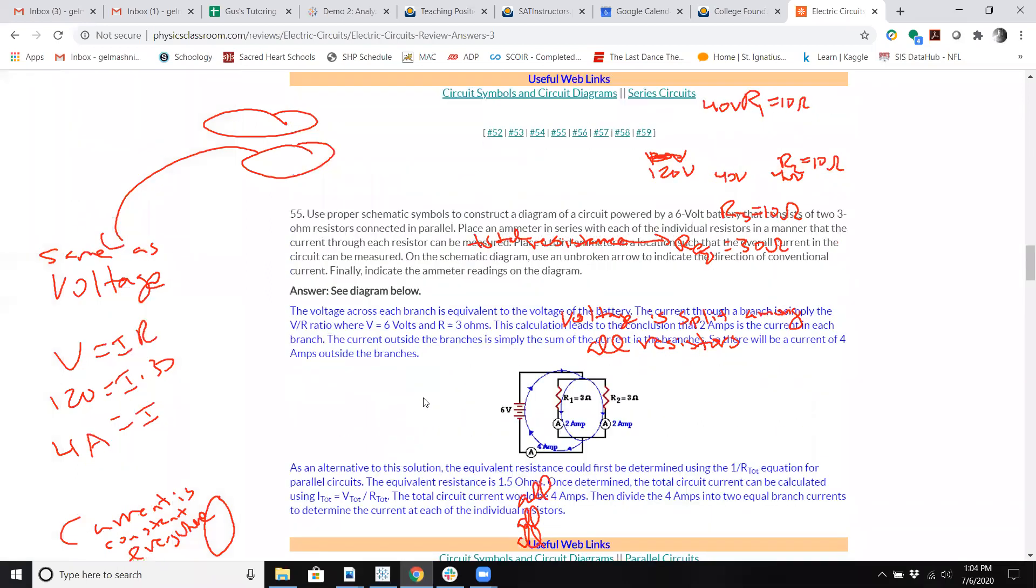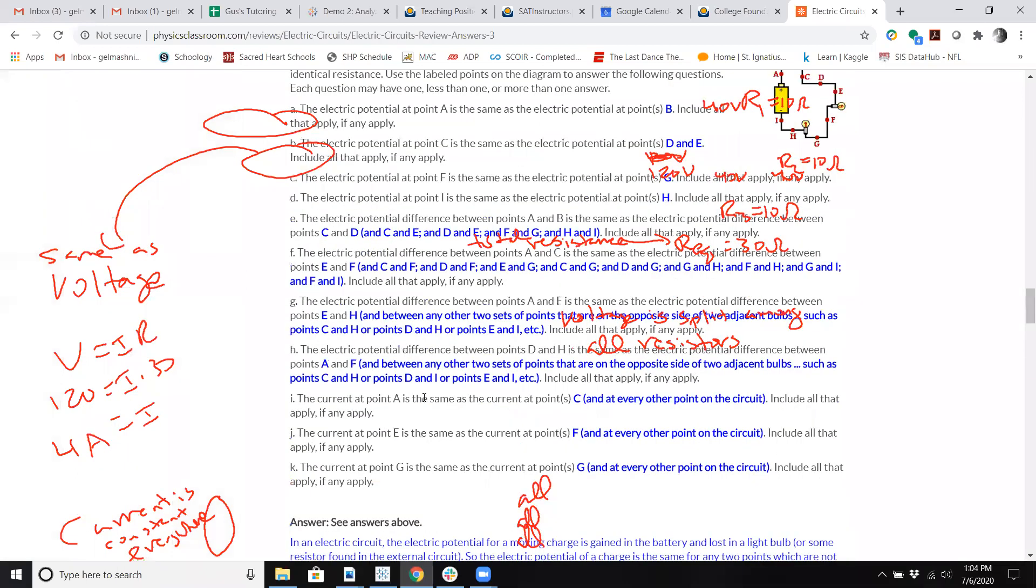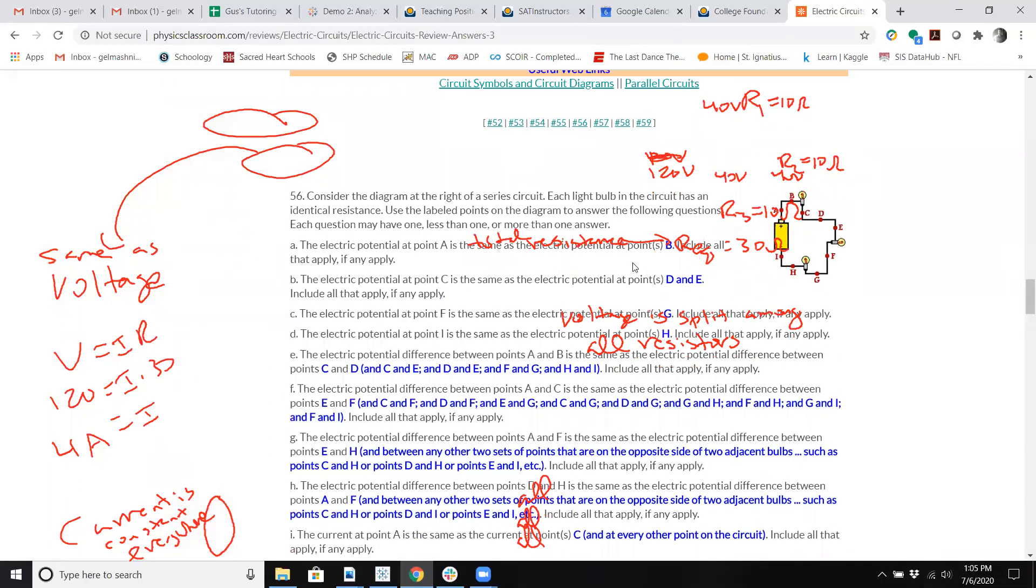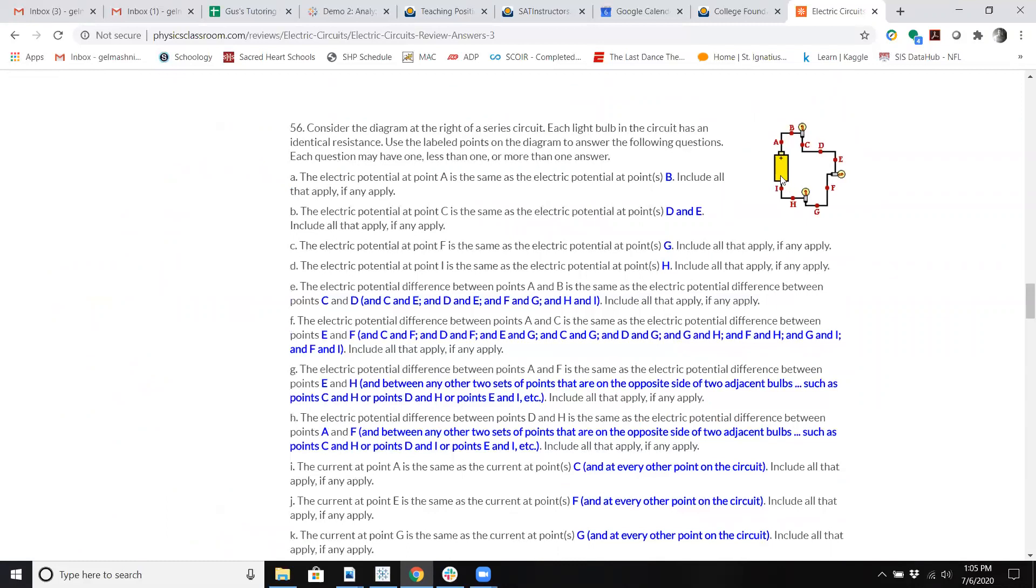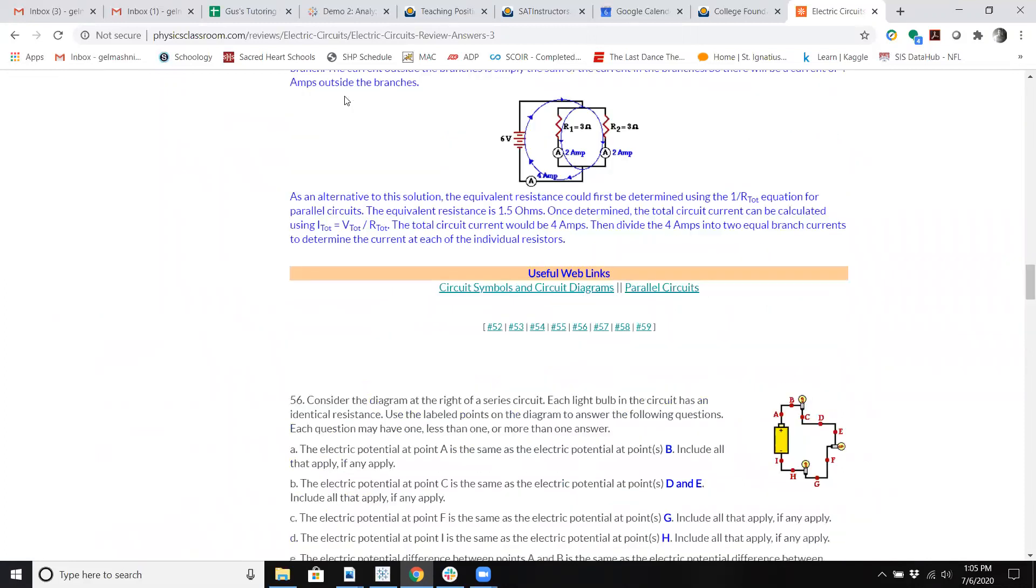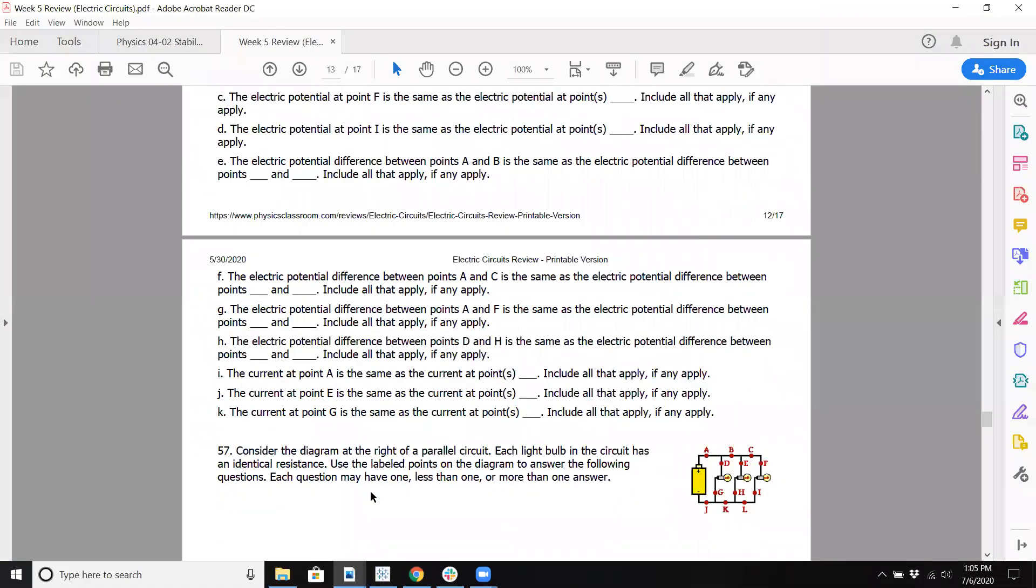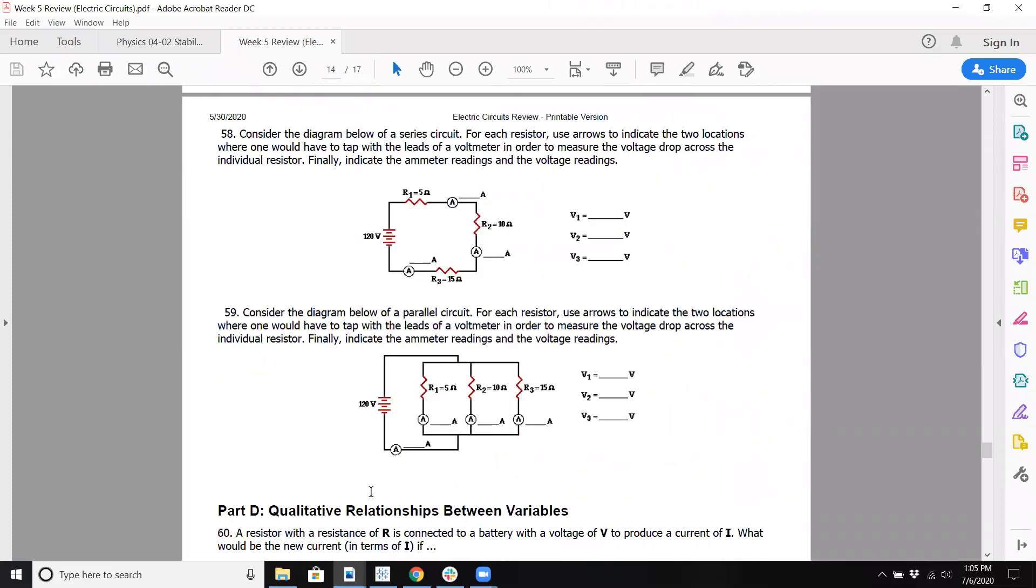Let's take a look at the answer because that one seems a little bit confusing to me. This is number 56. Yeah, we were right about I, J, and K. It's everywhere. And definitely point A and point B have the same potential. C is D and E because they're in the same portion. F and G and H and I. That's a little bit confusing. So let's actually go back and let's look at 58 and 59.